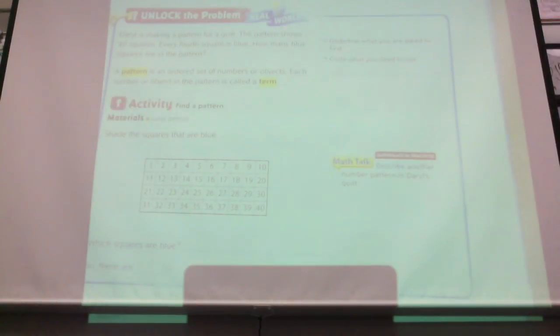Daryl is making a pattern for a quilt. The pattern shows 40 squares. You can see the pattern down here at the bottom. I have an example. Every fourth square is blue. The pattern, how many blue squares are in the pattern?